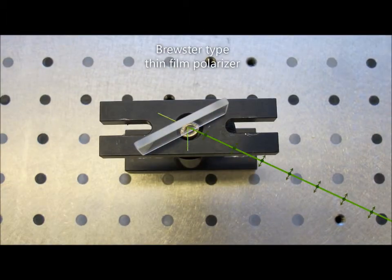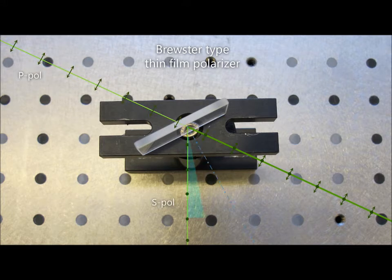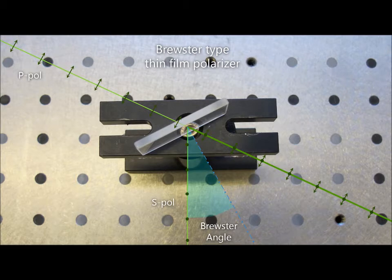S polarized component's polarization plane is perpendicular to the plane of incidence, so S polarized light is reflected at Brewster angle. Brewster angle provides highest beam splitting efficiency.